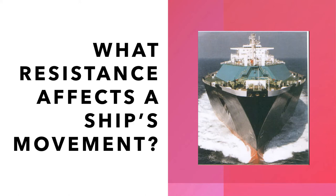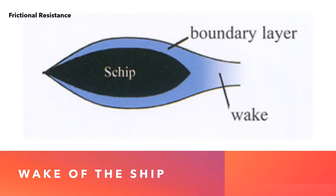The first type is frictional resistance. The friction between the water and the ship's shell is the cause of this type of resistance. The water in the boundary layer is accelerated by the ship's speed, dragged by the molecular friction. The boundary layer is the layer of water immediately below the keel, or the bottom, of the vessel.